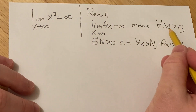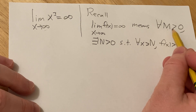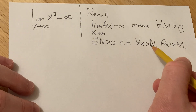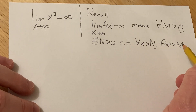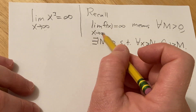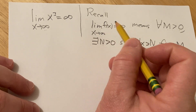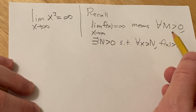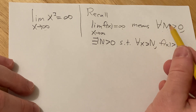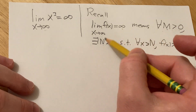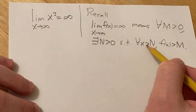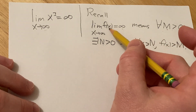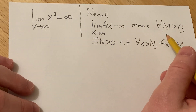So basically it's saying: for every positive number m, we can find an n such that whenever x is bigger than n, f of x is bigger than m. So whenever x is big, f of x is also big — whenever x gets really big, f of x also gets really big. The for-all statement here indicates that no matter what positive number you pick, it doesn't matter how big it is, you can always find a number n such that from some point on, f of x is going to be bigger than that positive number you chose.